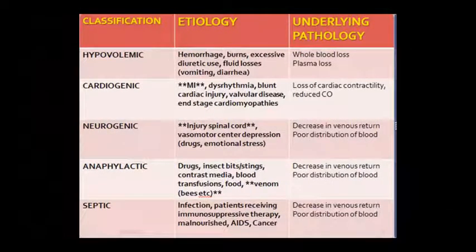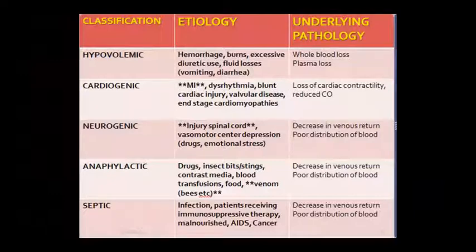Ab iske baad apan classification padhen. Causes ke basis par shock ka classification - paanch tarah ka shock hota hai: hypovolemic, cardiogenic, neurogenic, anaphylactic, aur septic. Jis mein sabse important septic shock hai. Ab etiology aur pathology dekhiye iski - hypovolemic mein poore blood ka loss ho jata hai, plasma loss ho jata hai.